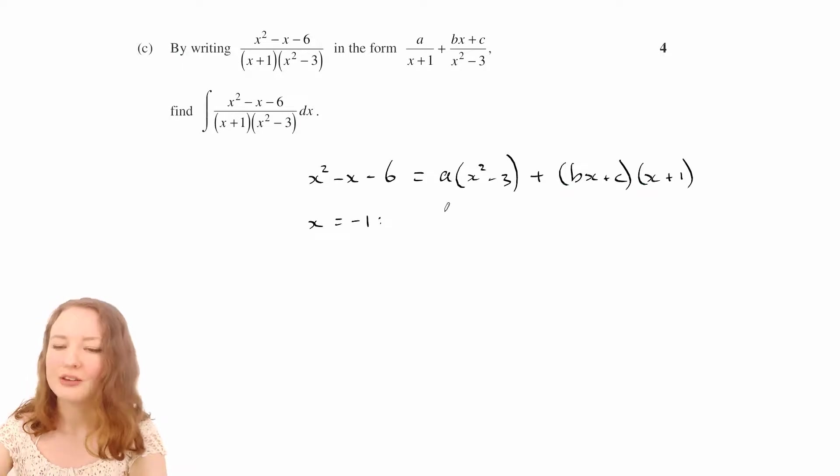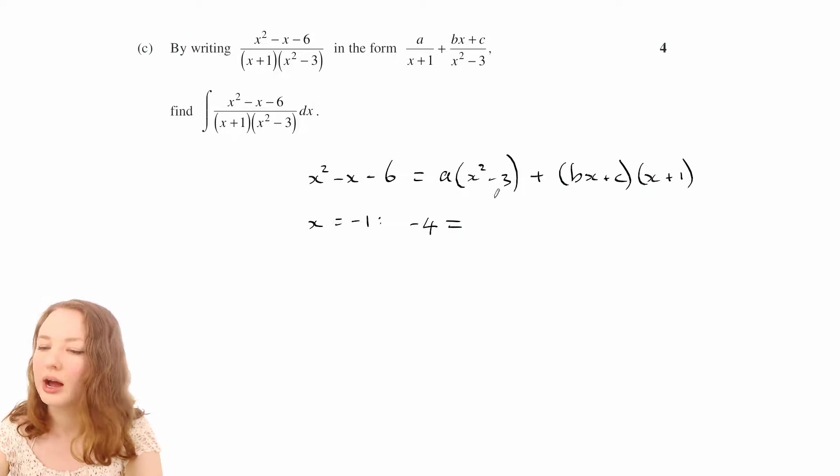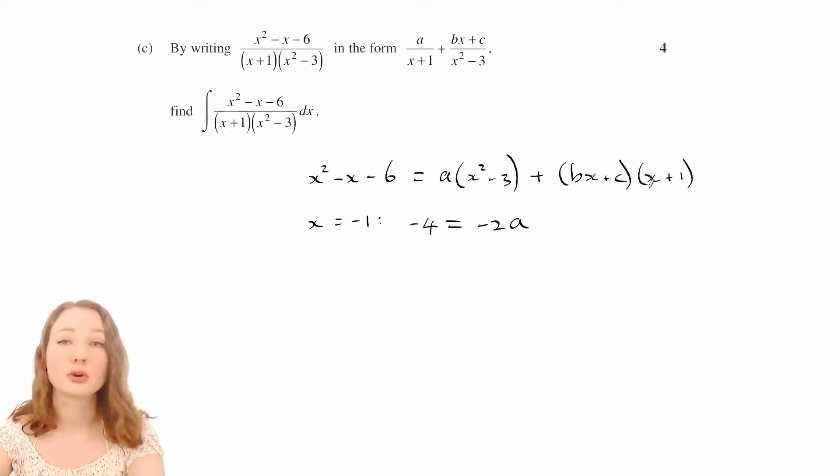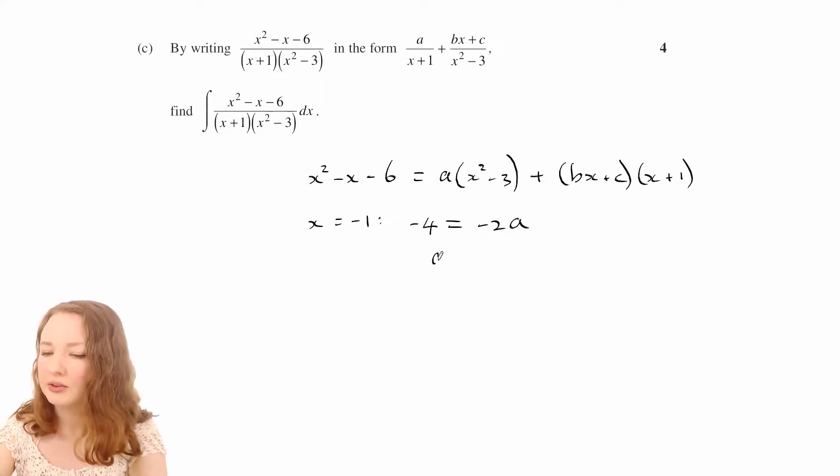So on the left, you'll get 1 minus negative 1 minus 6, which is negative 4. And then on the right, we've got negative 1 squared minus 1, which is positive 1 minus 3, which is negative 2. And then this bit is just 0, because that bit's 0, which is why I wanted to set it like that. So that gives us a equals 2 very easily.